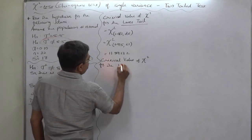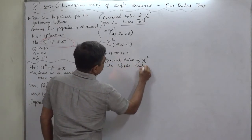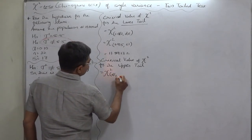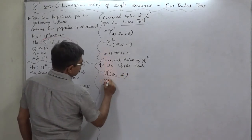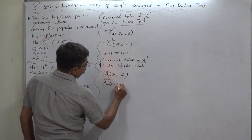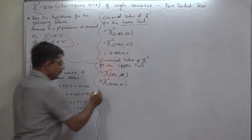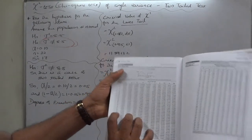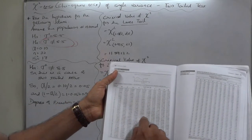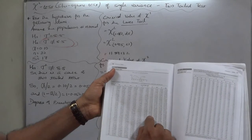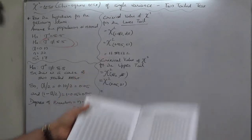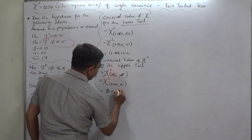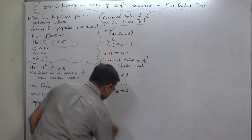Similarly, the critical value of chi-square for the upper tail is χ²(α/2, df) = χ²(0.05, 21). Again in the first column, degrees of freedom = 21, but now go to the column of 0.05, and that comes to 32.6706.